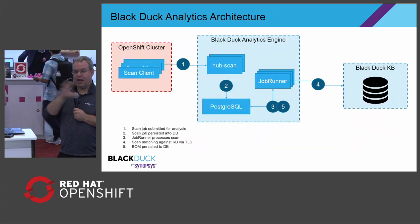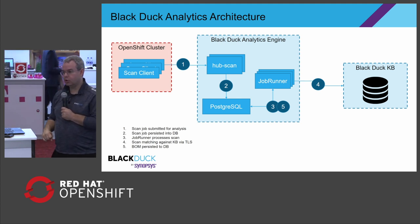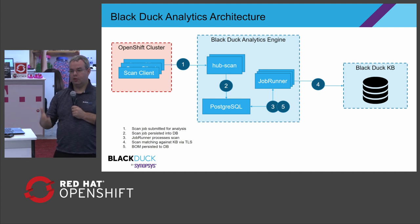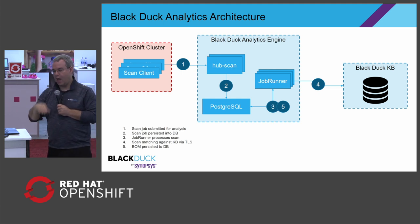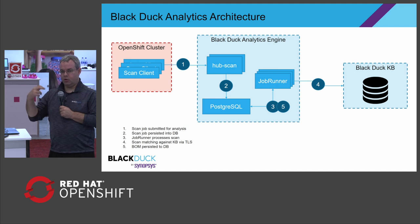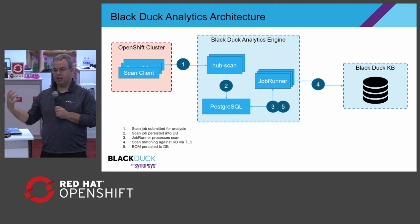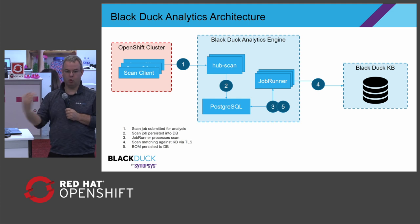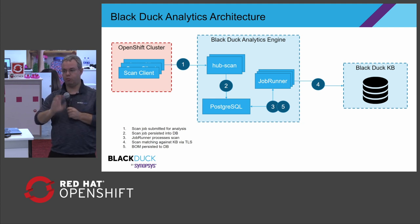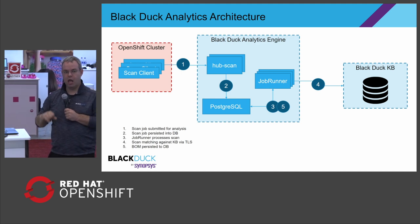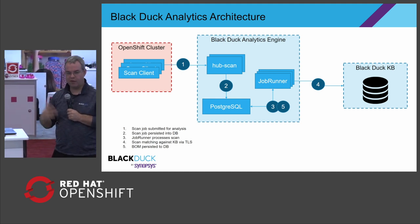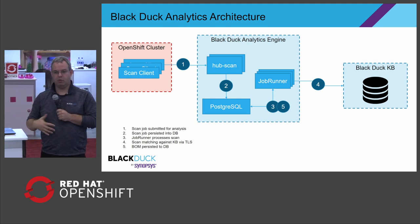Inside the analytics engine, we have scans coming in and a bunch of other activities. A new scan goes into a container we call a hub scan, whose job is to persist information to a database and build out a queue, then kick off a series of jobs to process those scan data elements. The hub scan is a scalable entity. A job runner — the thing that actually runs the jobs — is also a scale entity. The bigger the cluster, the more jobs that can come in. I might have a centralized analytics engine for dev, staging, and production — potentially three separate clusters — all feeding into a knowledge base containing metadata around open source risks.